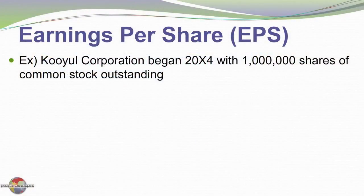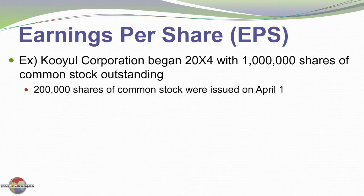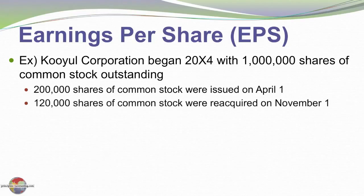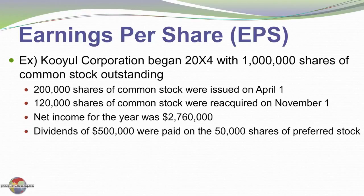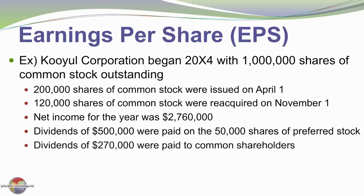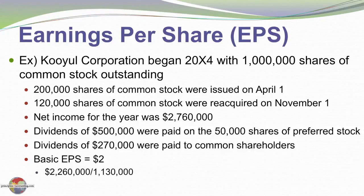Let's look at a detailed example — this same illustration is reproduced in the textbook. Cooliole Corporation began 20x4 with 1 million shares of stock outstanding. 200,000 additional shares were issued on April 1, 120,000 shares were reacquired on November 1, and the net income for the year was $2,760,000. 500,000 in dividends were paid to the preferred shareholders and 270,000 in dividends were paid to the common shareholders. The basic earnings per share calculates to be $2 per share — specifically $2,260,000 divided by 1,130,000 shares.